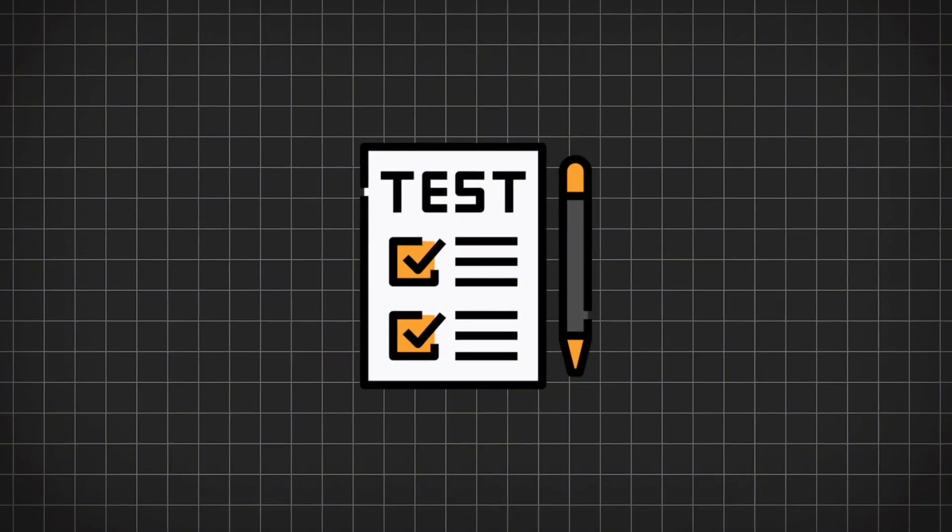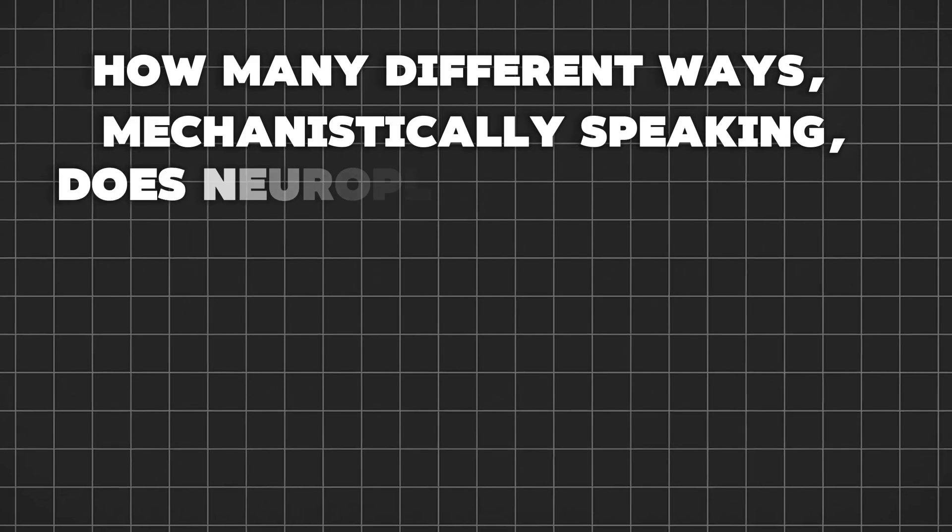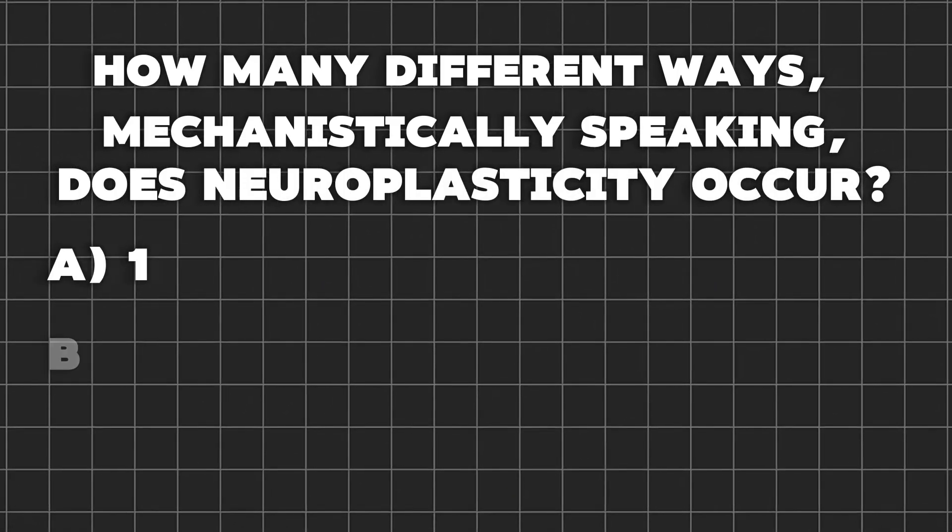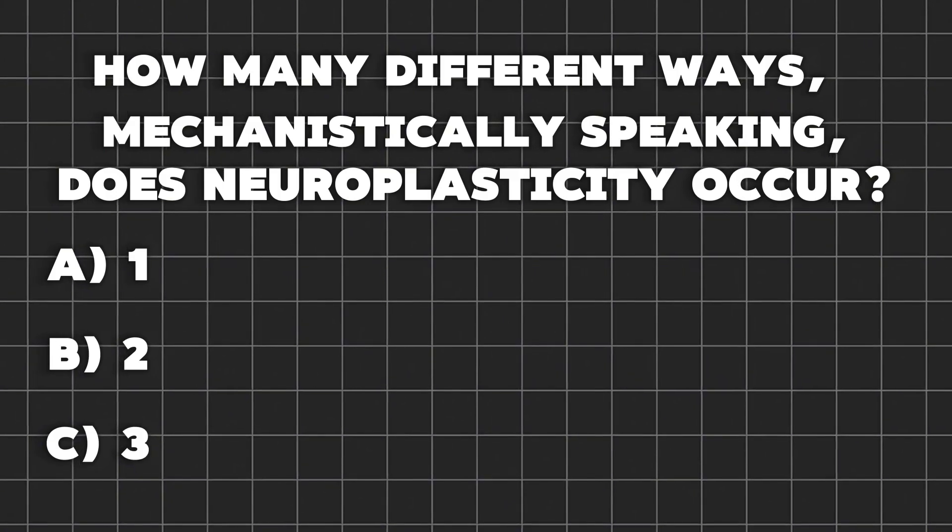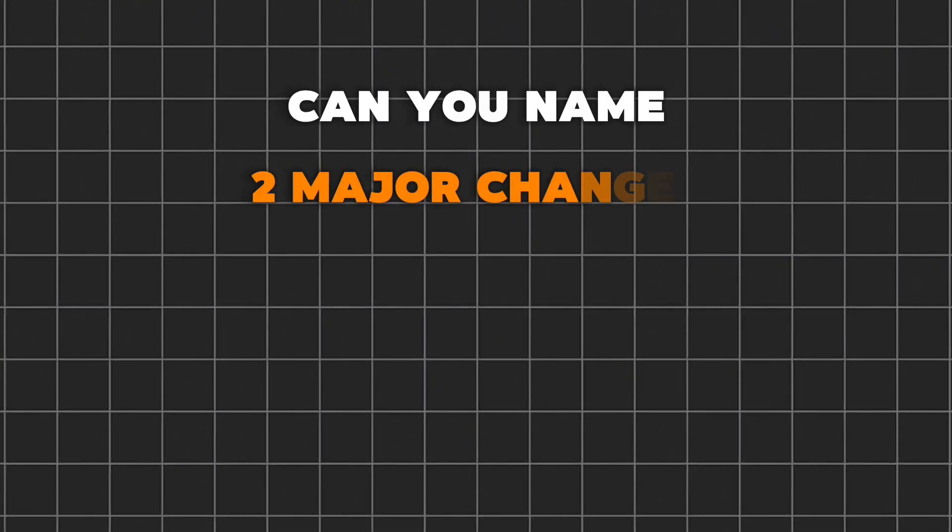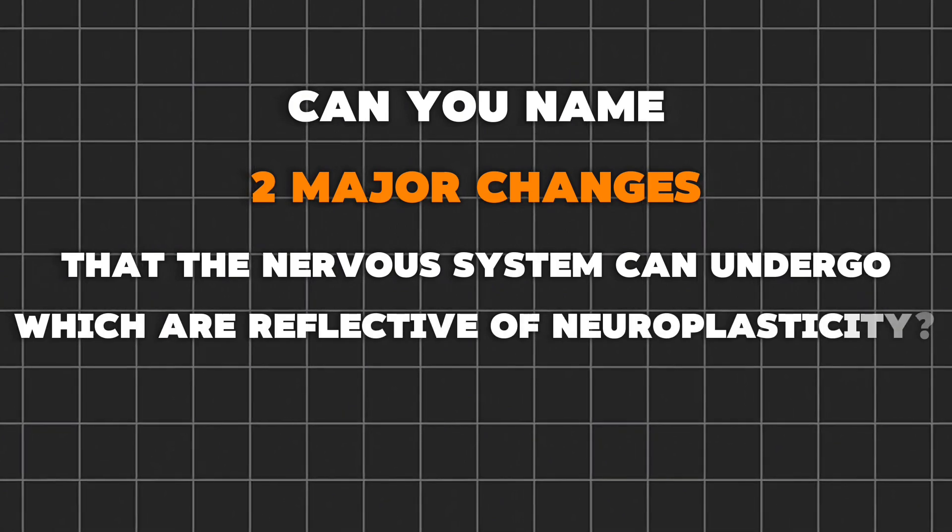Here's my question. This is a two question quiz. How many different ways, mechanistically speaking, does neuroplasticity occur? Is it one mechanism, two mechanisms or three mechanisms?